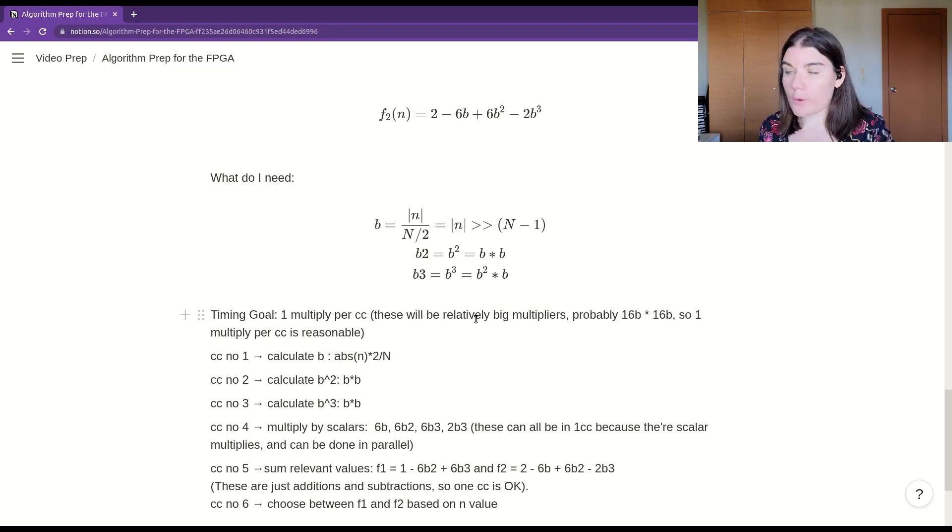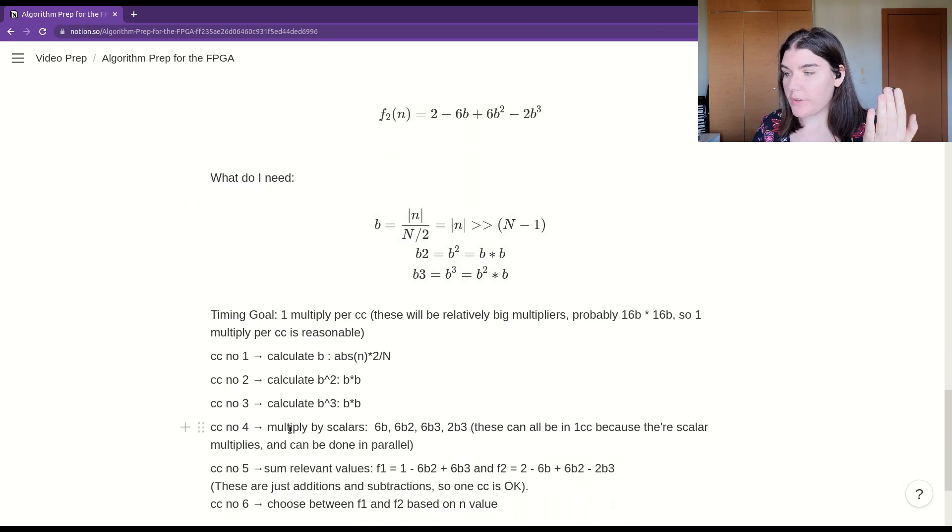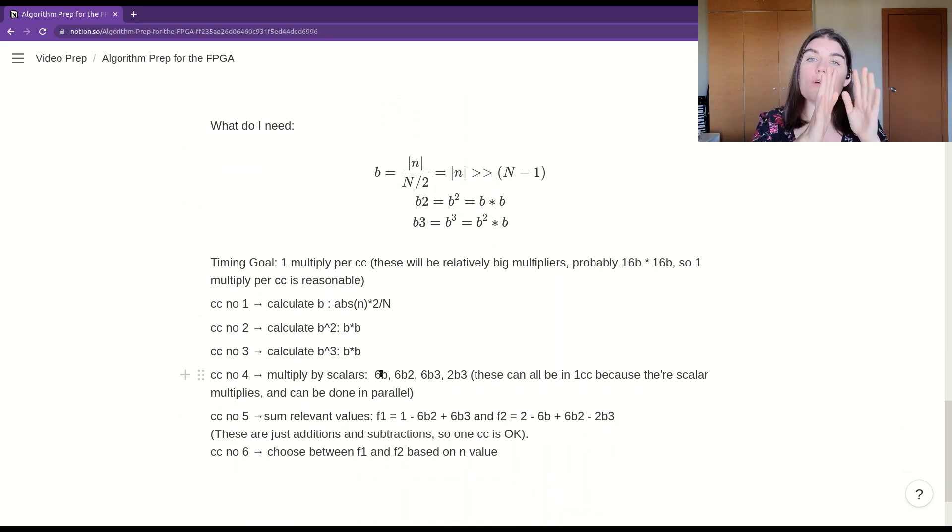And then on the fourth clock cycle, I'm going to implement all my scalars. So I need to multiply B squared by six in both cases, so I create my 6B squared. And then I'm going to create my 2B cubed and my 6B cubed and my 6B. So this fourth clock cycle is going to be creating all of the scaled versions of B. And I can do that all in one clock cycle because they'll all happen in parallel and because I'm multiplying by scalars, so those aren't that resource intensive.